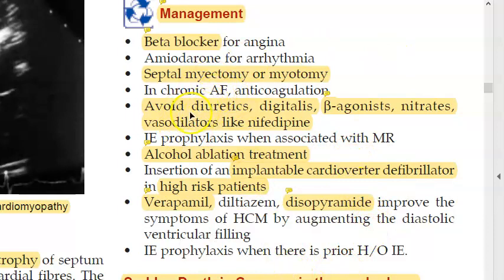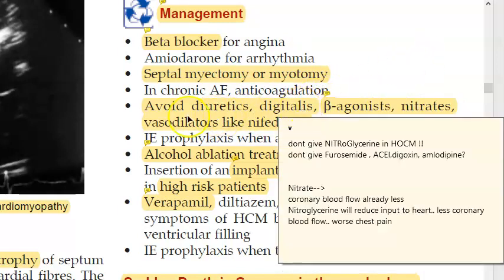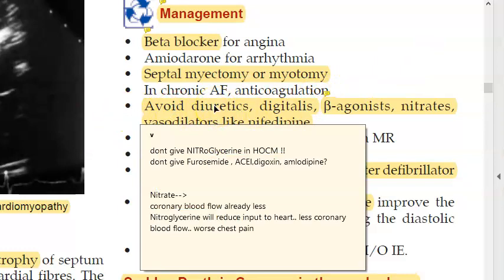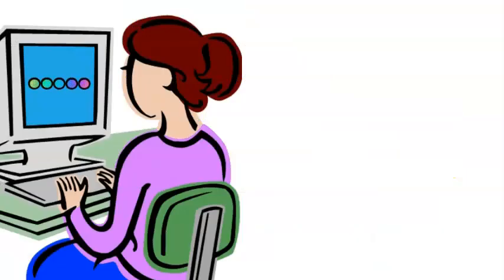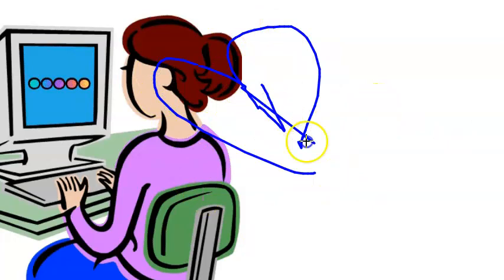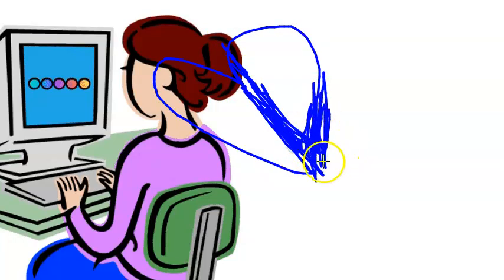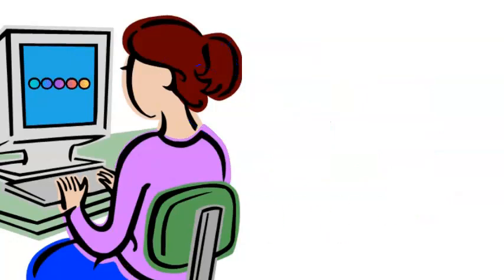Important: nitrates and diuretics are completely contraindicated in HOCM. If nitrates are given, vasodilation reduces coronary blood flow further, which is already compromised. Standard heart failure treatments should not be used in HOCM.